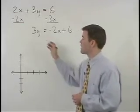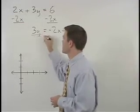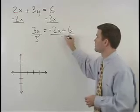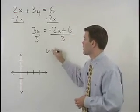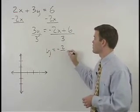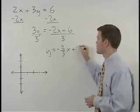Continuing on, to get y by itself we would divide both sides by 3 to get y equals negative 2 thirds x plus 2.